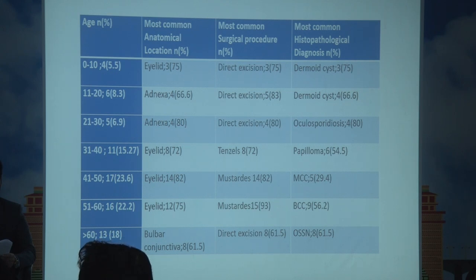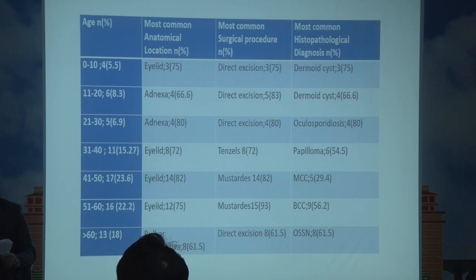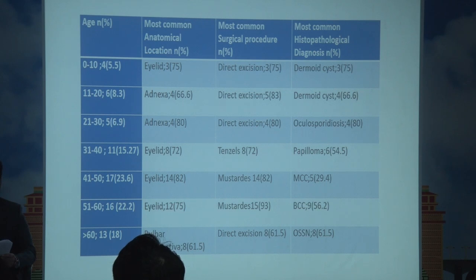The commonest diagnosis in the 41 to 50 age group was sebaceous cell carcinoma. In the 51 to 60 age group, the eyelid was the commonest anatomical location, Mustardé was the commonest procedure, and basal cell carcinoma was the commonest histopathological diagnosis. In the over-60 age group, bulbar conjunctiva was the commonest anatomical location; direct excision was done and OSSN was the commonest histopathological diagnosis.